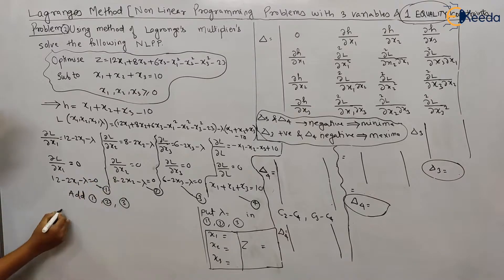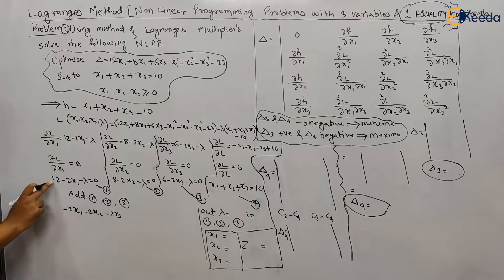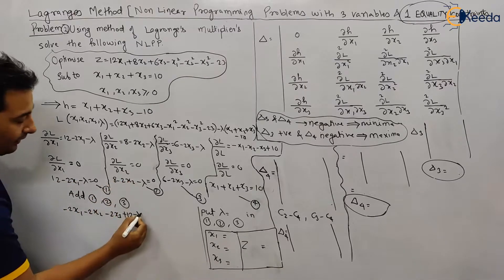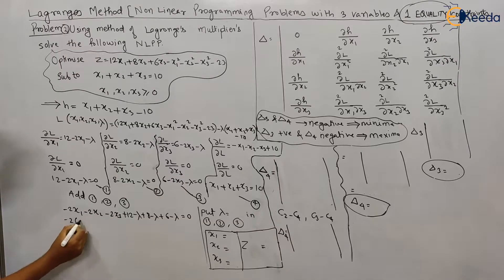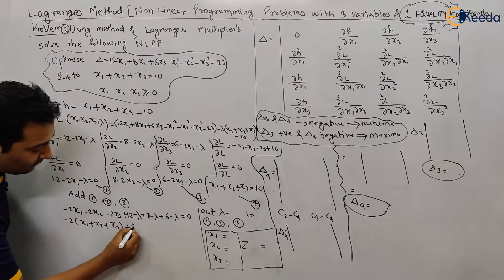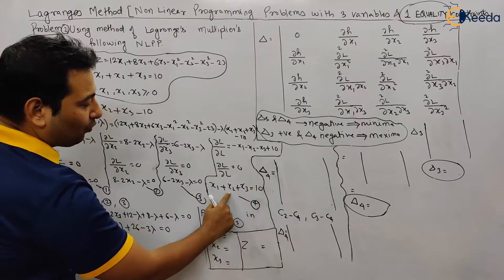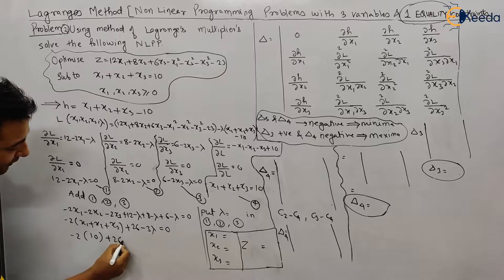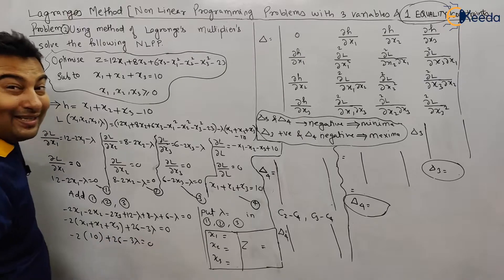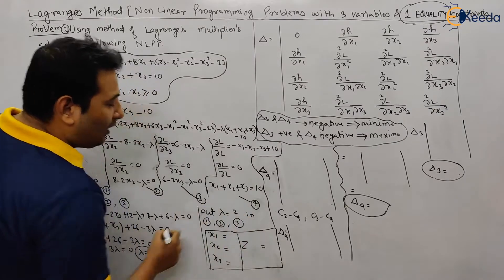As discussed, add equations 1, 2, and 3. Adding them gives: minus 2x1 minus 2x2 minus 2x3 plus (12 + 8 + 6) minus 3lambda = 0, which is minus 2(x1 + x2 + x3) plus 26 minus 3lambda = 0. Substituting x1 + x2 + x3 = 10 from equation 4: minus 20 plus 26 minus 3lambda = 0, so 6 minus 3lambda = 0, giving lambda = 2.